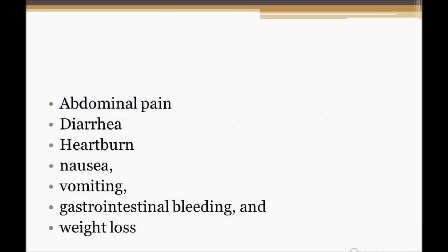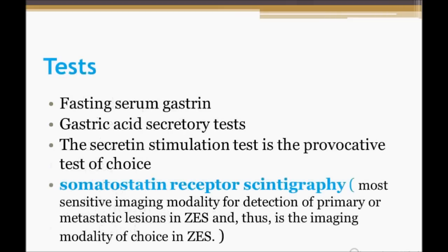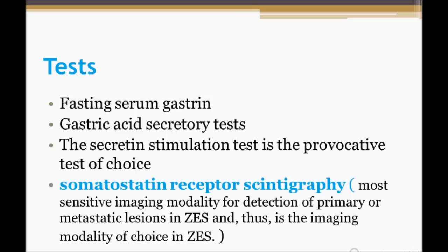The clinical presentation will be similar to peptic ulcer disease: abdominal pain, diarrhea, heartburn, nausea, vomiting, bleeding, and weight loss. For tests, the fasting serum gastrin level needs to be checked — it will be raised.